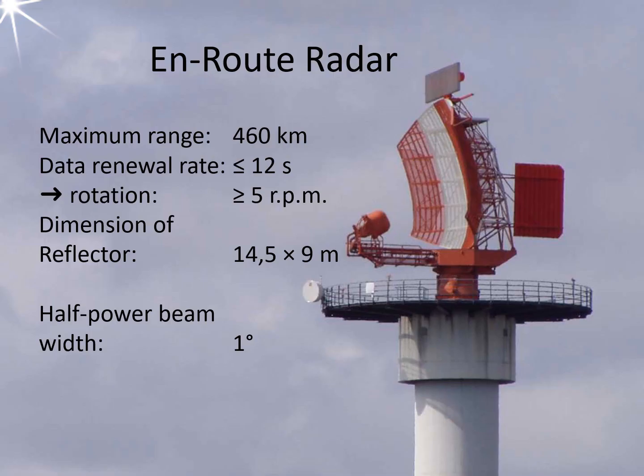Enroute radar sets are designed to monitor air traffic outside the airfield's zone of control. They operate in the L-band in the IEEE designation, or D-frequency band in the NATO designation, and can monitor air traffic up to 250 nautical miles away, which corresponds to 460 kilometers. These radar sets rotate at a slow speed of 5 to 6 revolutions per minute. Enroute radars are primary radars that provide two-dimensional surveillance of the airspace and are usually paired with a secondary radar set.